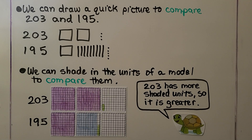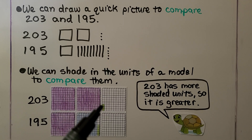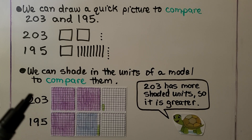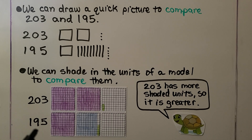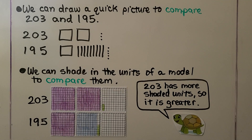We can shade in the units of a model to compare them. We take blank models and shade in two flats of 100 and three ones for 203. For 195, we shade in one whole flat for the 100, nine columns for the nine tens, and five ones. We can see we've shaded in more for 203 than for 195, so 203 is greater.